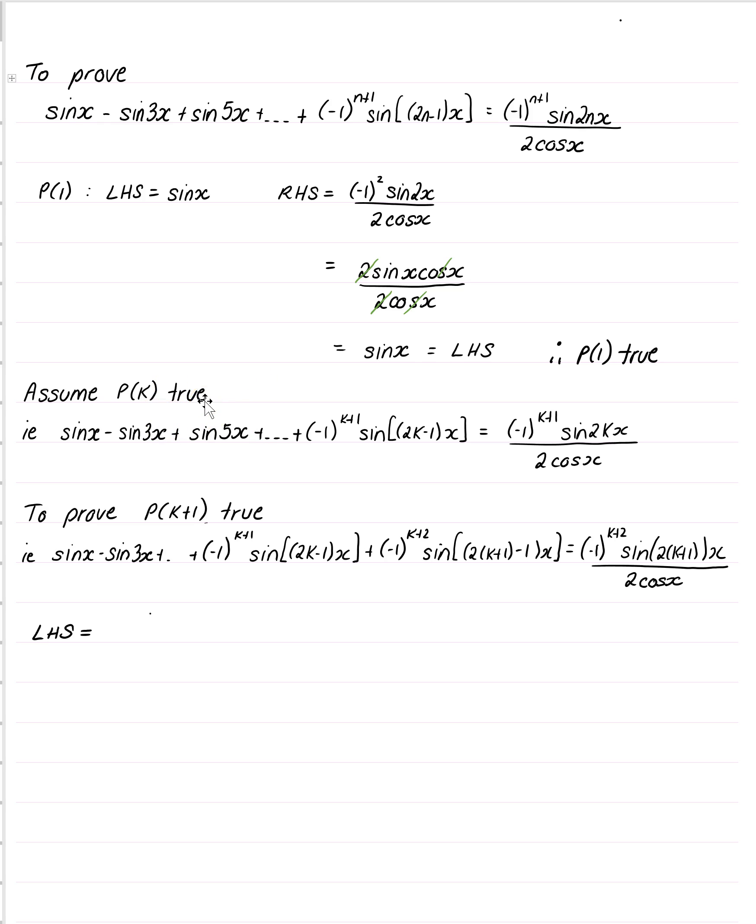which is P of k plus 1, if that's true, that would then mean that all the other ones are true as well, the so-called domino effect. Now, when we have substituted this in, we can see that all the way up from here to here, that is indeed P of k.